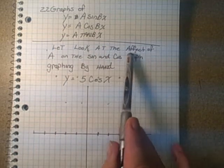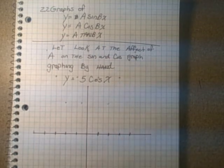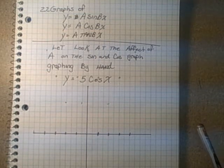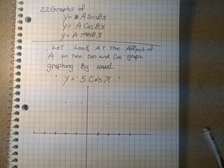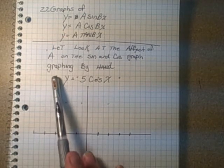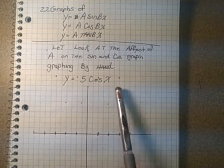Let's look at the effect of A on the sin and cos graph. The sin and cos graphs are similar in that they have the same periods and they have the same maximum minimums. They just have a little bit different shape in them. So the first thing we're going to do is graph y equals 5 cos x.